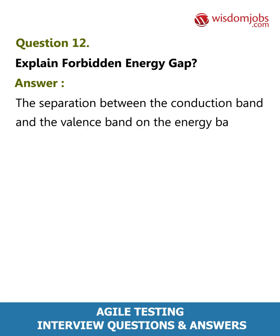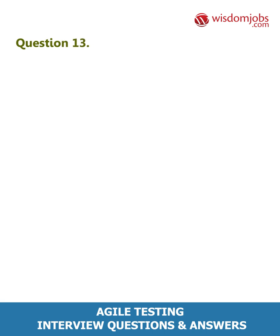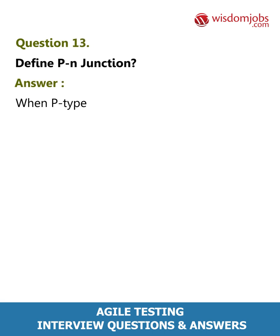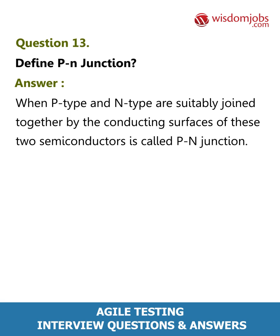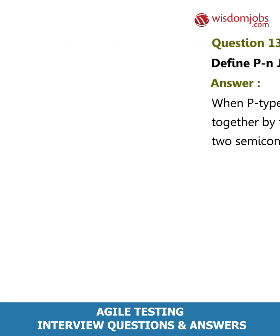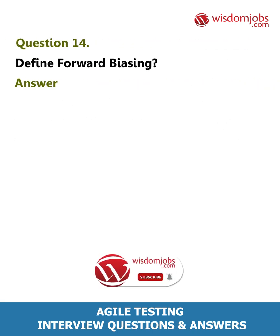Question 13: Define PN junction. Answer: When P-type and N-type semiconductors are suitably joined together, the conducting surfaces of these two semiconductors is called a PN junction.